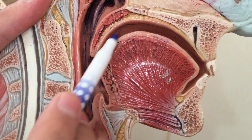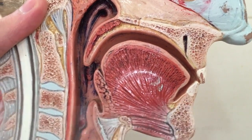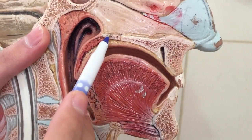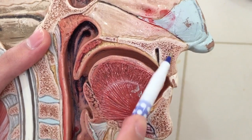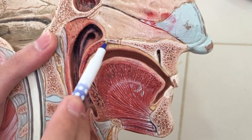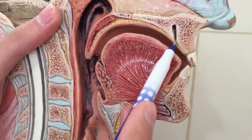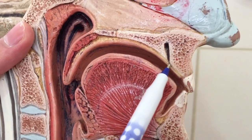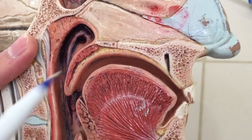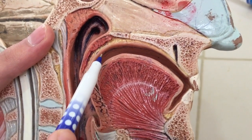The floor of the oral cavity proper is the tongue. Talking about the palate — this is the hard palate, composed of the palatine process of the maxilla and also the horizontal plate of the palatine bone. This is the incisive foramen, leading to the incisive canal in the maxilla.